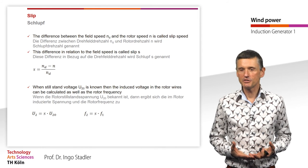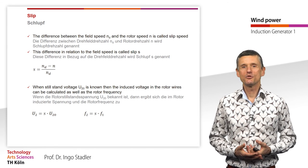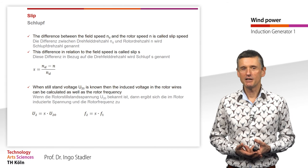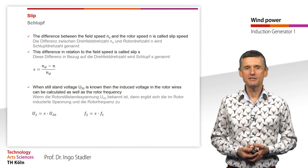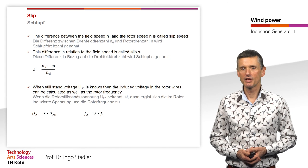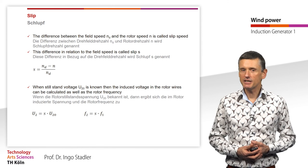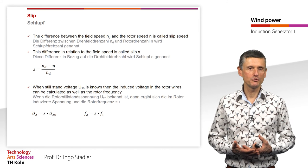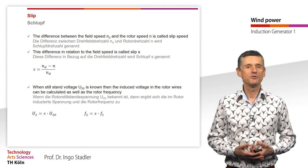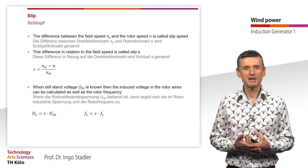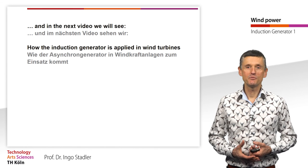A very important quantity for induction generators is the slip. The difference between the field speed N_D and the rotor speed N is called the slip speed. The slip S is defined as S = (N_D − N) / N_D. Knowing the standstill voltage U_20, the rotor voltage U_2 = S × U_20, and the rotor frequency F_2 = S × F_1. In the next video we will see how the induction generator is applied in a wind turbine. Thank you very much.